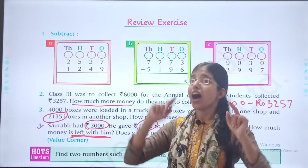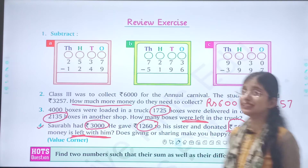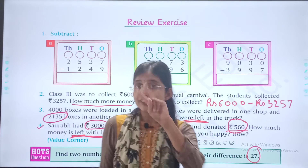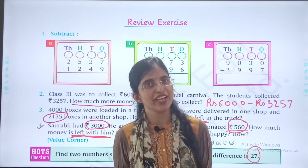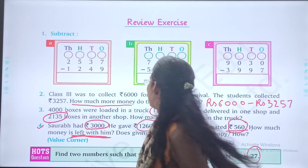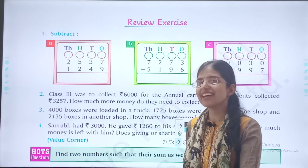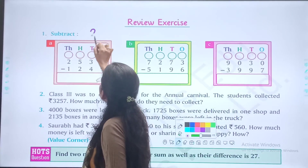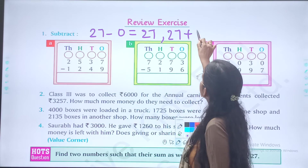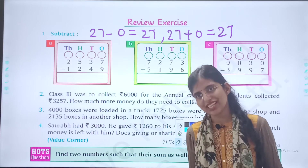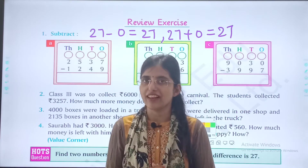Now, the higher order thinking question. Find two numbers such that the sum as well as the difference is 27. Think — which two numbers are they? The answer is 27 and 0. See children: 27 minus 0 is also 27, and 27 plus 0 is also 27. This is how we solve higher order thinking questions — they are very simple. You just have to think a little bit.